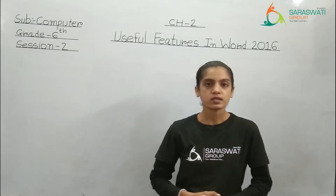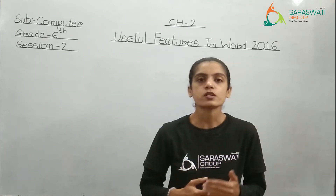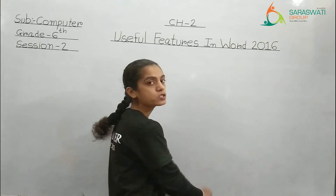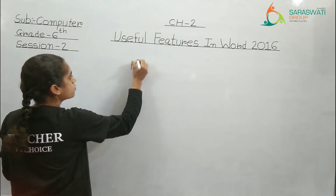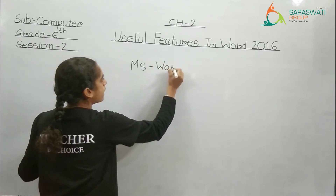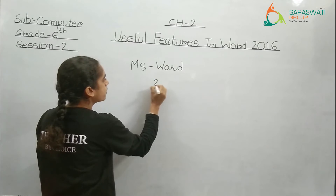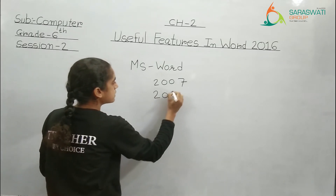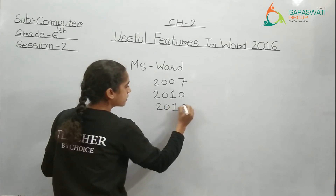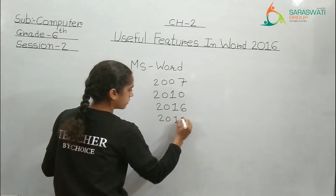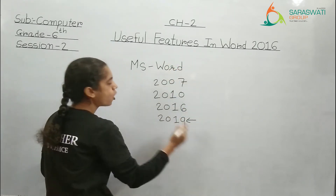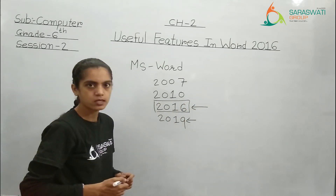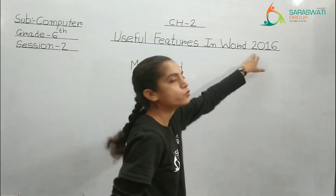When we talk about a computer, there are so many software and updated versions coming every time. Word - we all are aware of this. Here we are talking about MS Word, that is Microsoft Word. It has so many versions, like MS Word 2007, then 2010, then 2016, and then 2019. We have to study about the features which were there in Word 2016, and so here it is written features in Word 2016.